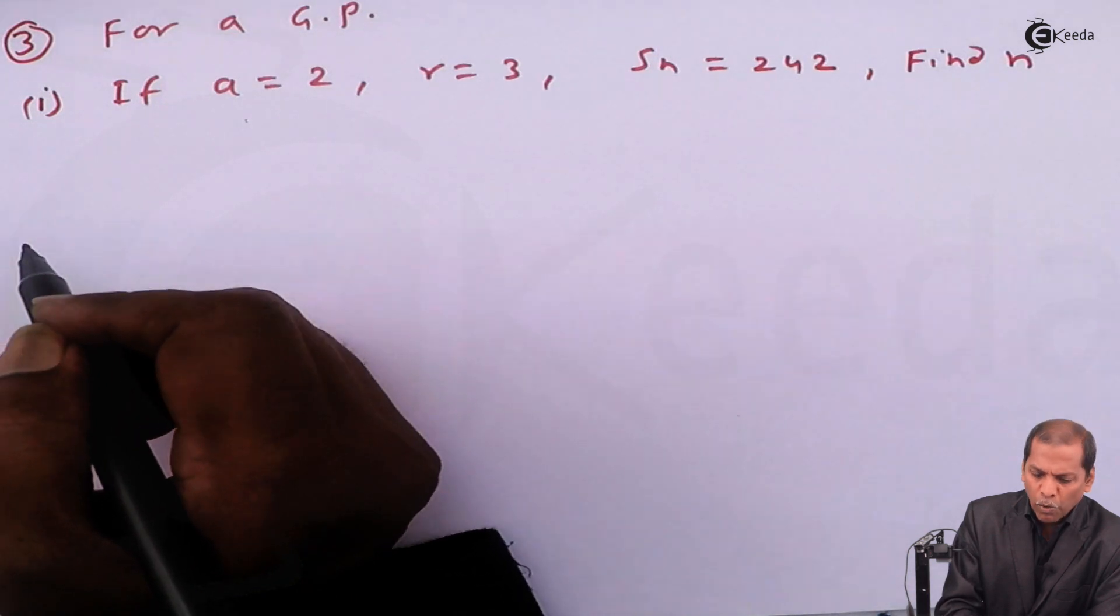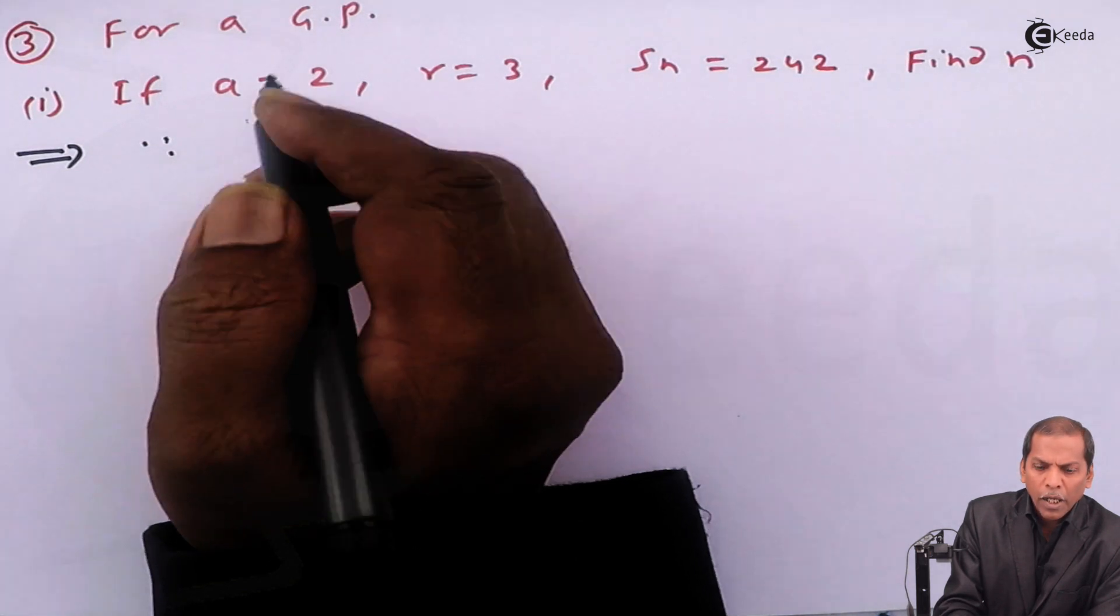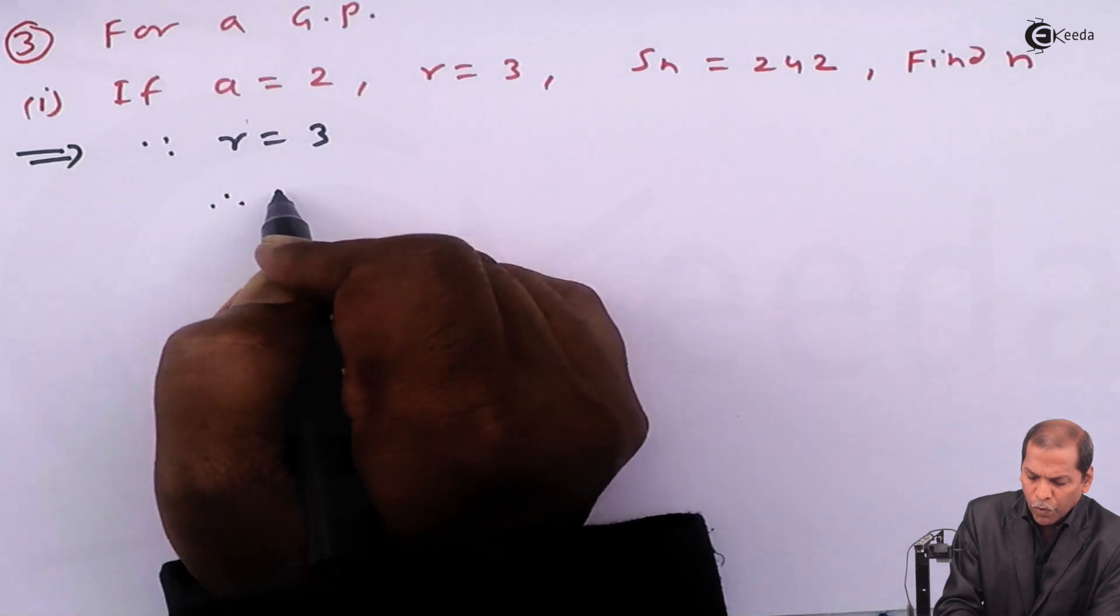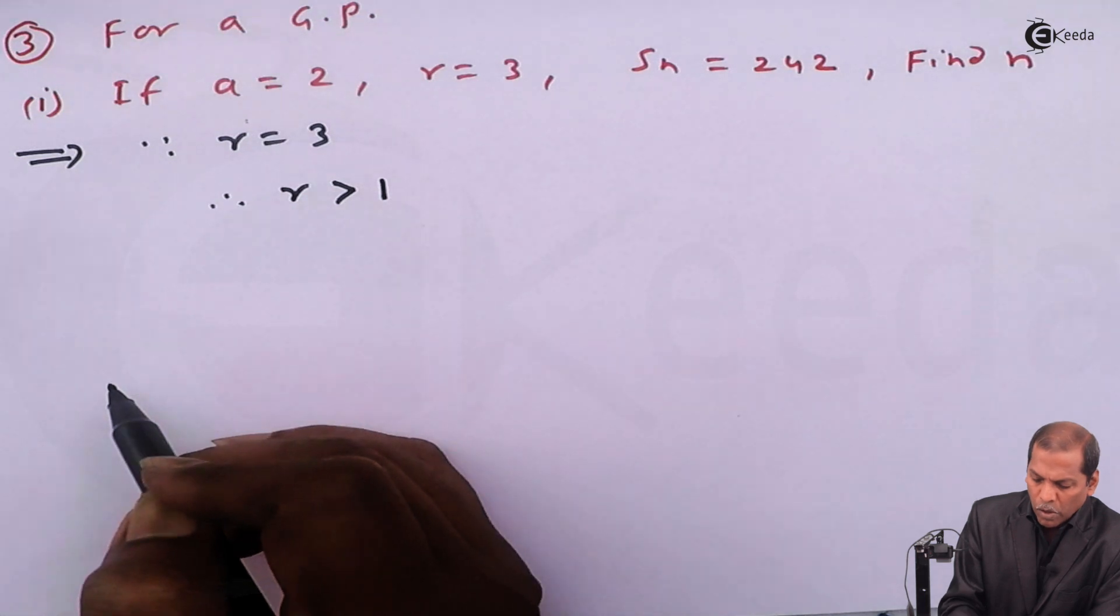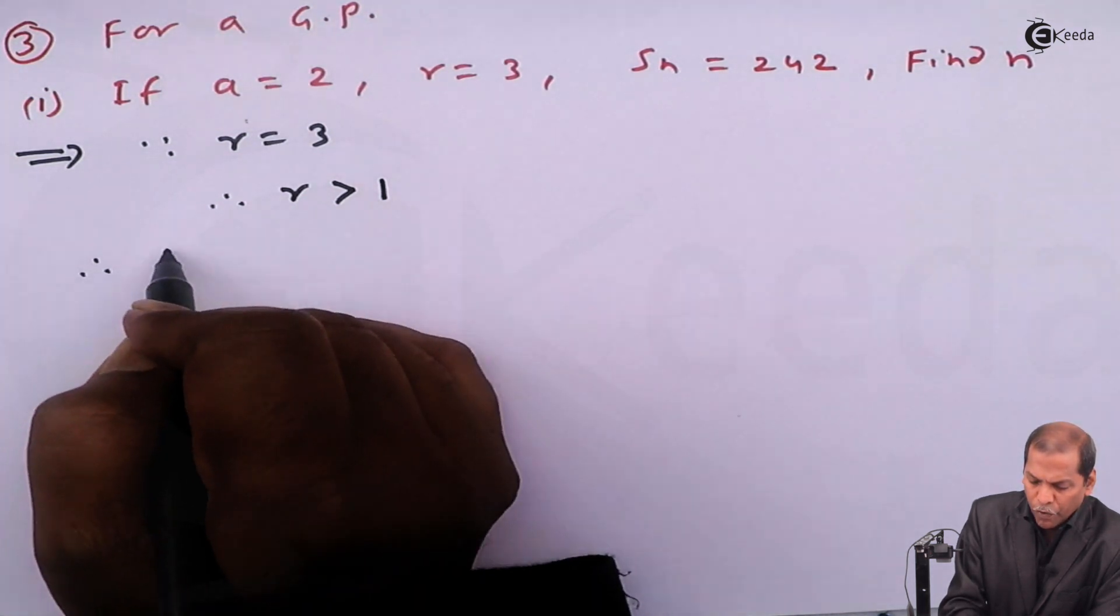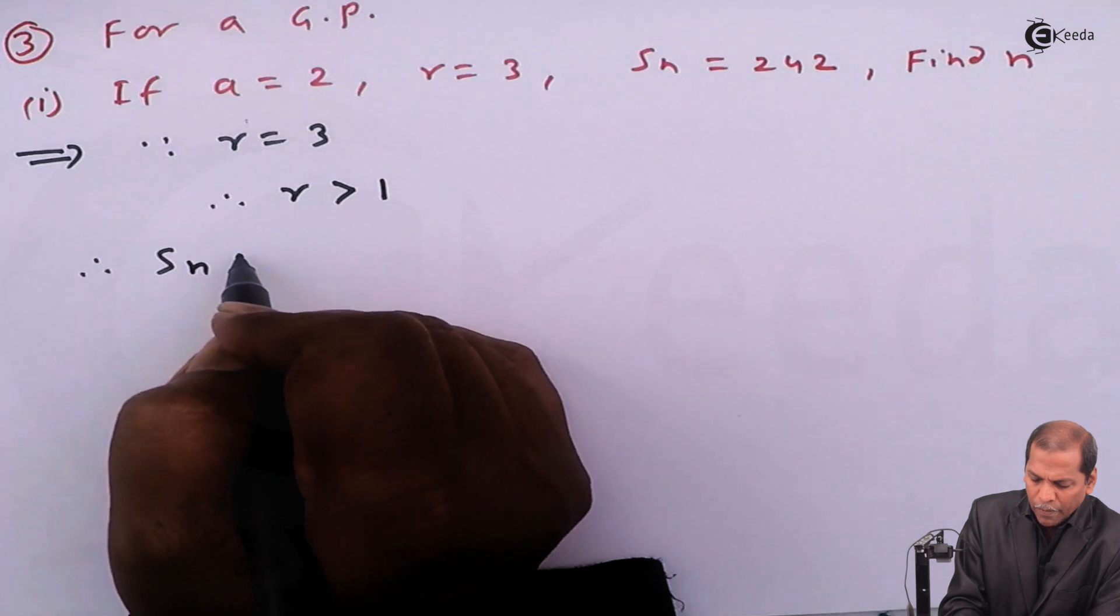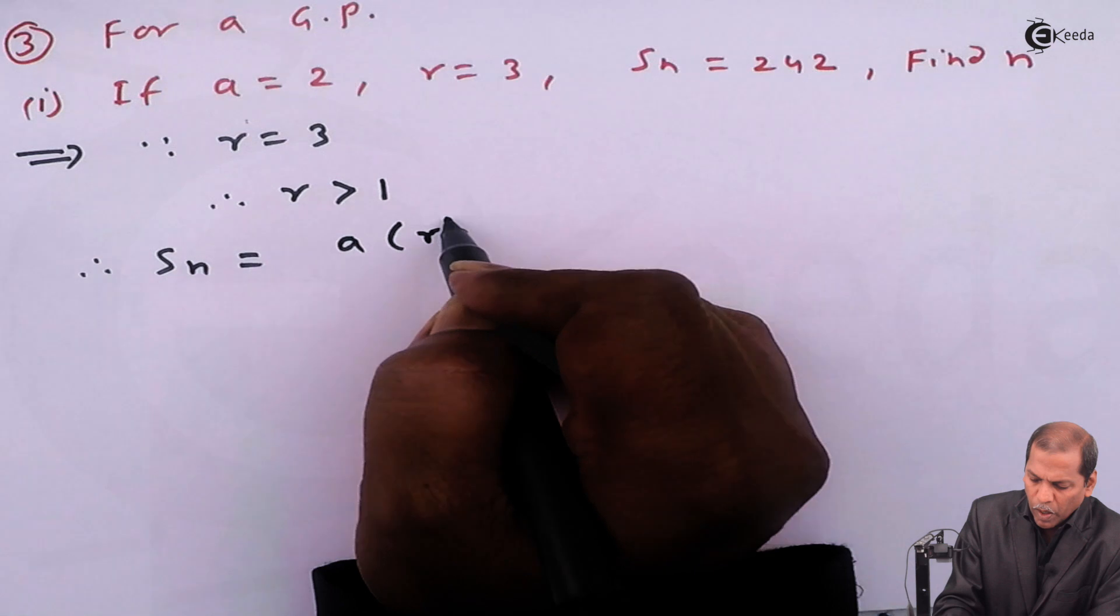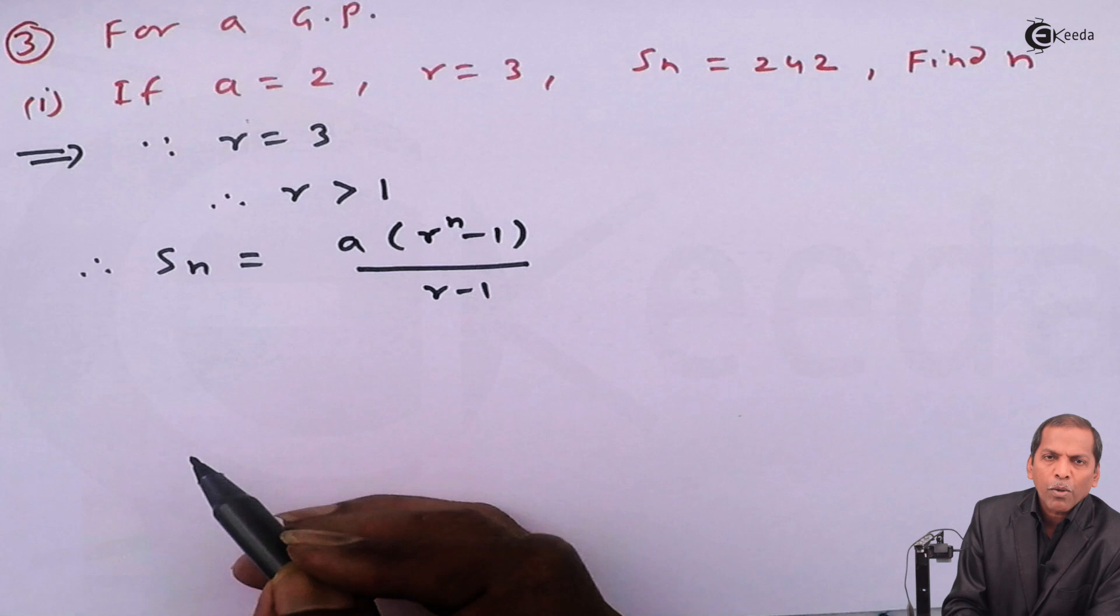Now let's see the solution. Since in this problem we have given r equals 3, therefore r must be greater than 1. And therefore in that case, the formula for sum of first n terms of a GP, that is Sn, is equal to a in bracket r raise n minus 1 upon r minus 1.